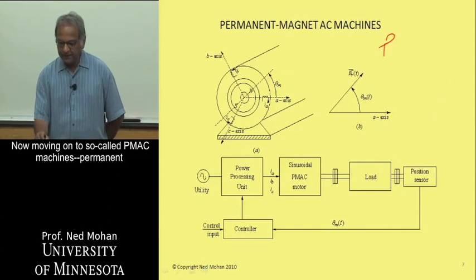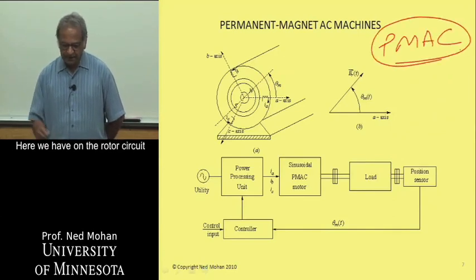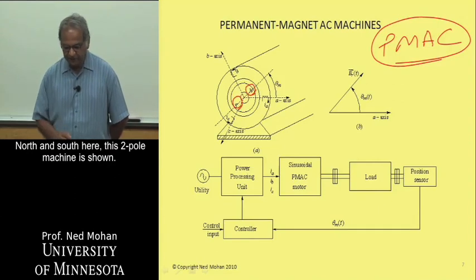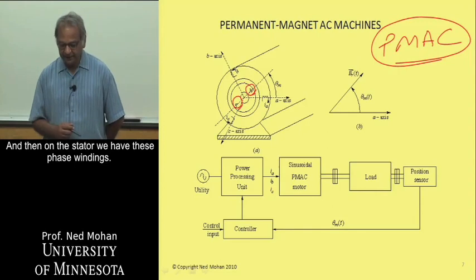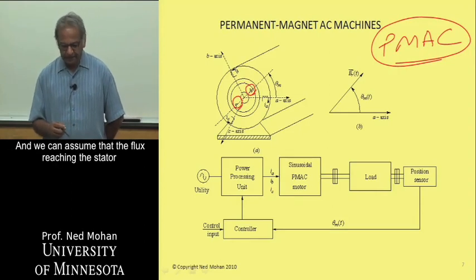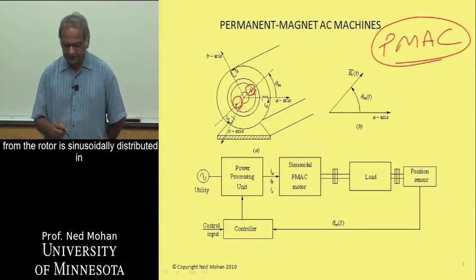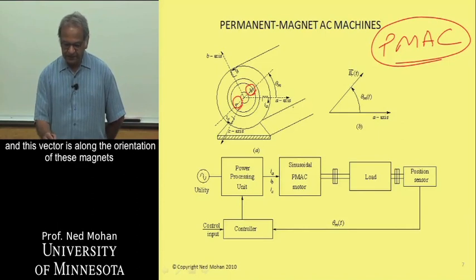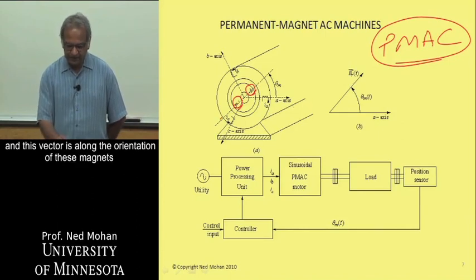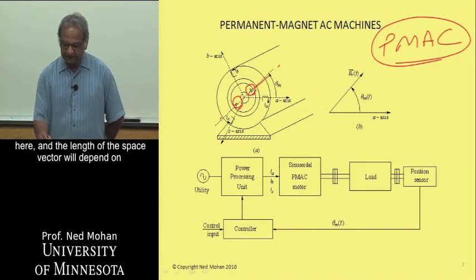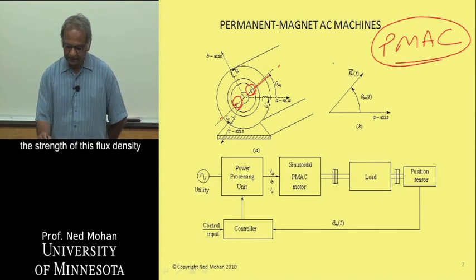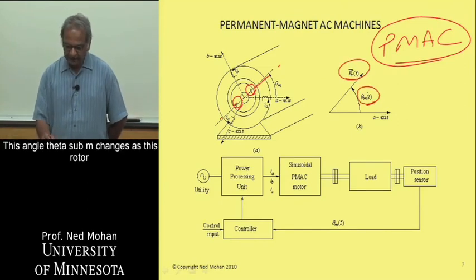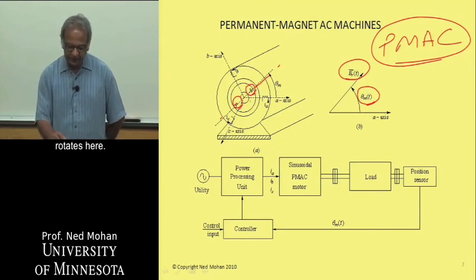Now, moving on to the so-called PMAC machines, permanent magnet AC machines. Here, we have on the rotor circuit, these permanent magnets, north and south here, just a two-pole machine is shown. And then on the stator, we have three-phase windings. And we can assume that the flux reaching the stator from the rotor is sinusoidally distributed in space at any given time. It can be represented by a space vector, which in this vector is along the orientation of these magnets here. And the length of this space vector would depend upon the strength of this flux density that is reaching the stator. So that is what is shown here. And this position θm, or this angle θm, changes as this rotor rotates here.